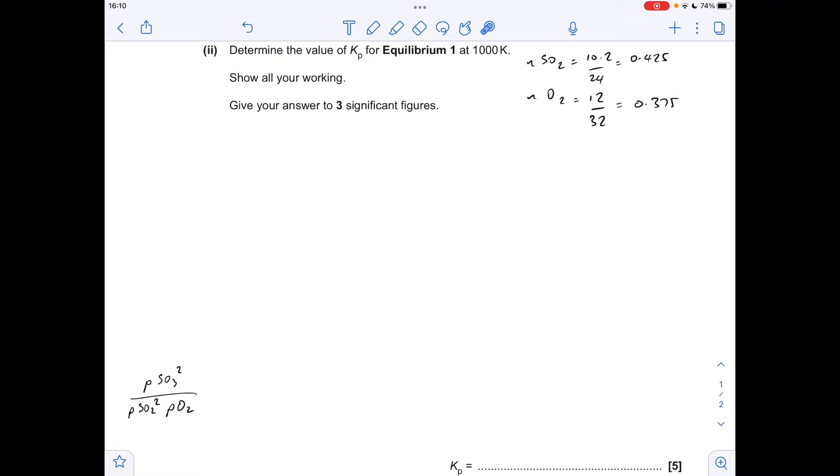Moving on to the calculation, first thing we've got to do is work out the moles of SO2 and O2. We were told that the SO2 filled a 10.2 dm cubed container at RTP, so that over 24 is that many moles. We were told it was 12 grams of O2, so mass over MR gives that many moles.